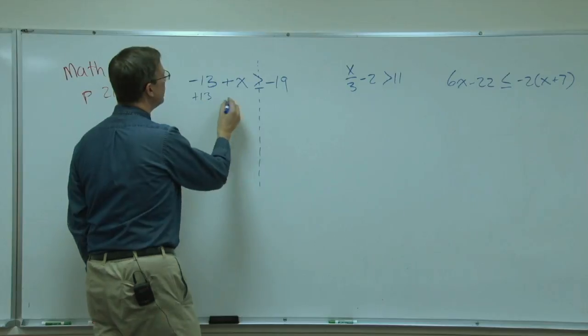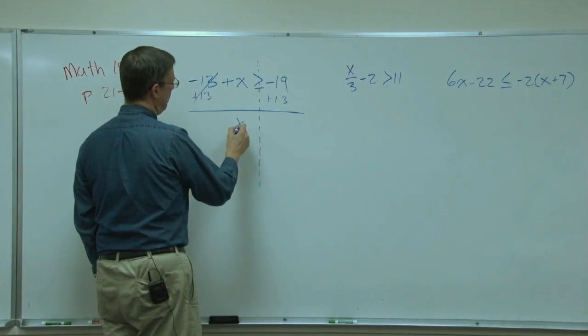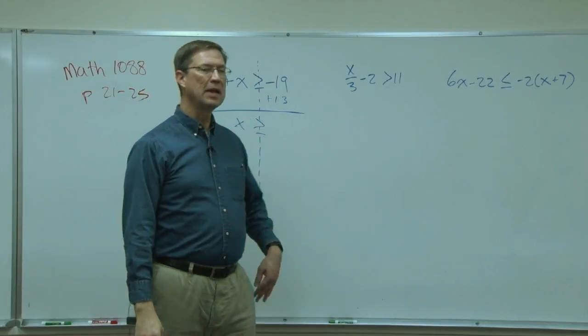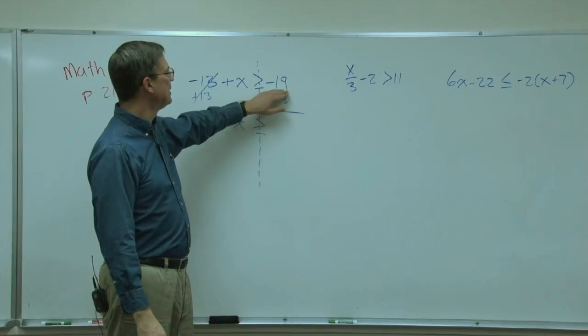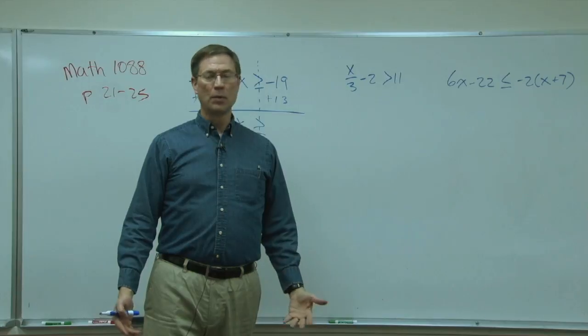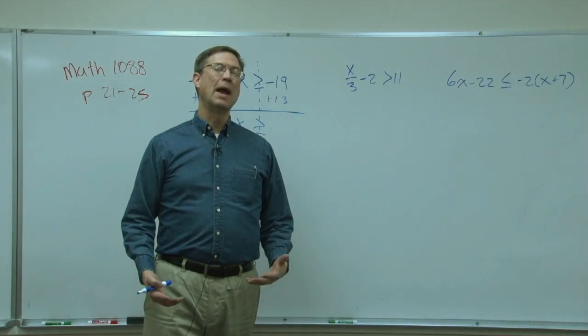X is greater than or equal to, but now let's think what is negative 19 plus positive 13. This is where we have to remember these rules. Okay, we have to drill, drill, drill. If we're adding and the signs are different, then we subtract the smaller from the larger, keep the sign of the larger.